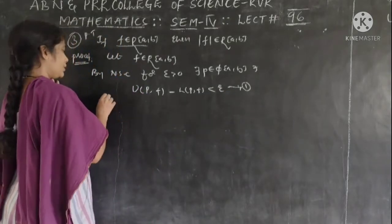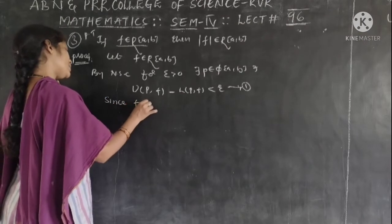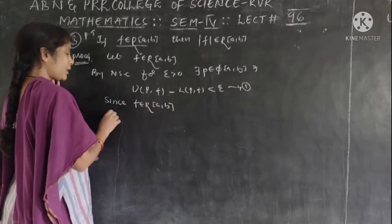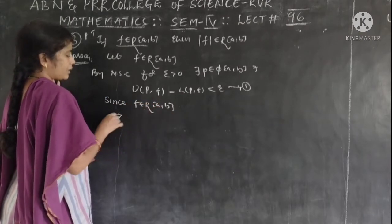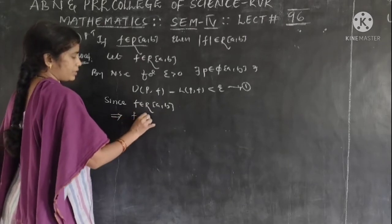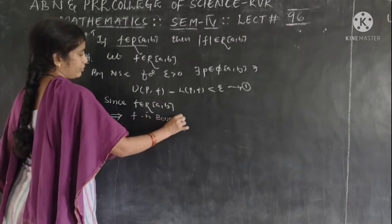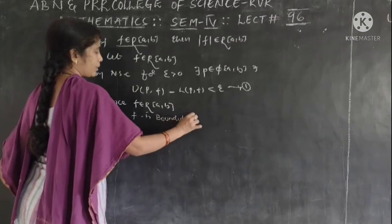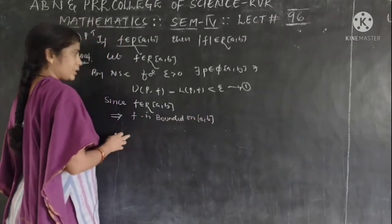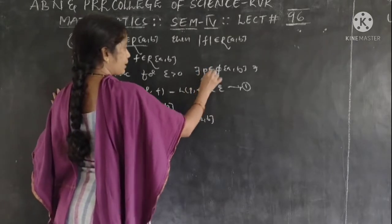We can see that the function is a Riemann integrable function on closed [a, b]. If it is Riemann integrable, hence it is bounded — F is bounded on closed [a, b]. It is bounded on each and every segment of the partition.